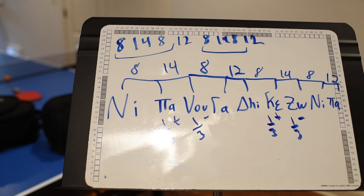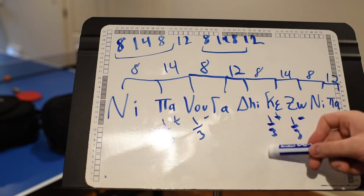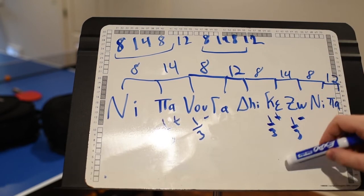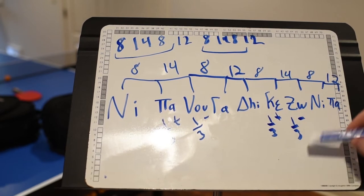As opposed to Ni Pa Vo, it's Ni Pa Vo. So Pa is going to be a third sharp, Vo is going to be a third flat, and Ni is going to be natural.